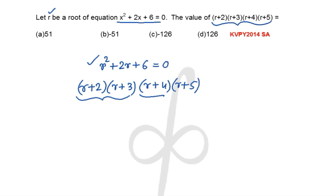If we open up on multiplying, this is going to give us r² + 5r + 6, and the other group is going to give us r² + 9r + 20.